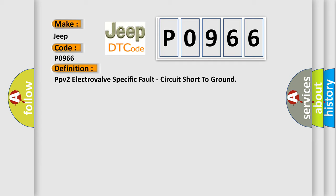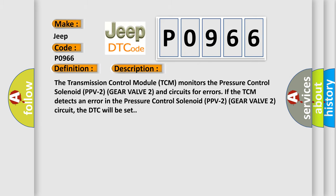And now this is a short description of this DTC code. The transmission control module TCM monitors the pressure control solenoid PPV2 gear valve 2 and circuits for errors. If the TCM detects an error in the pressure control solenoid PPV2 gear valve 2 circuit, the DTC will be set. This diagnostic error occurs most often in these cases.